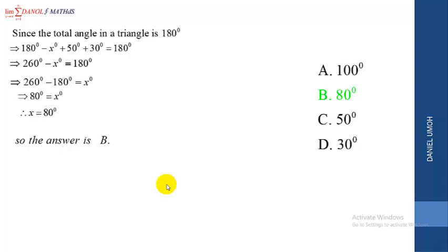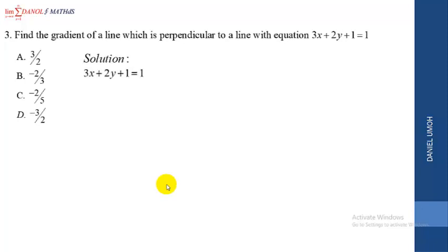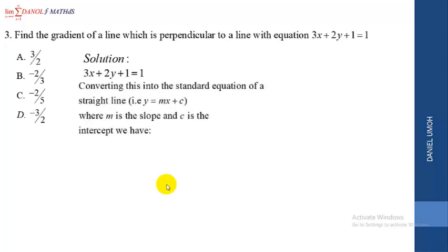We now go into Question 3, the last question for this video. The question says: find the gradient of a line which is perpendicular to a line with equation 3x plus 2y plus 1 equals 1. Below are the options. Since we cannot guess, we go into the solution and bring down the equation: 3x plus 2y plus 1 equals 1. We must convert this into the standard equation of a straight line.